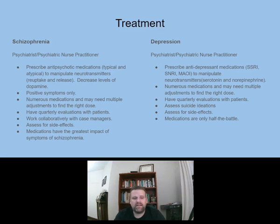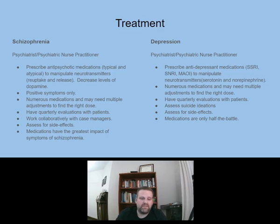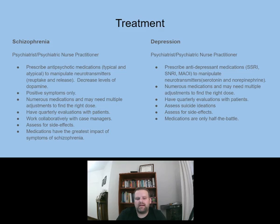For schizophrenia, a psychiatrist and psychiatric nurse practitioner will prescribe antipsychotic medications. There are two types: typical and atypical. What they do is manipulate neurotransmitters — reuptake and release — and for schizophrenia that involves decreasing levels of dopamine. Typical medications are older medications and carry a higher risk of extrapyramidal side effects like tardive dyskinesia. Atypical medications are newer and have a lower risk of those side effects, though you can still get them — you're just at less risk.